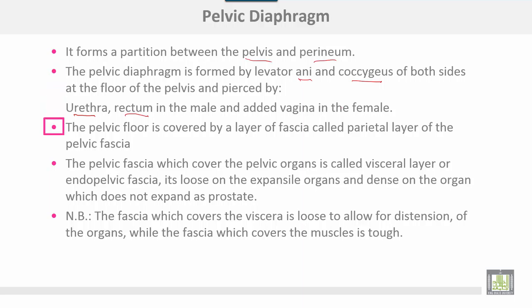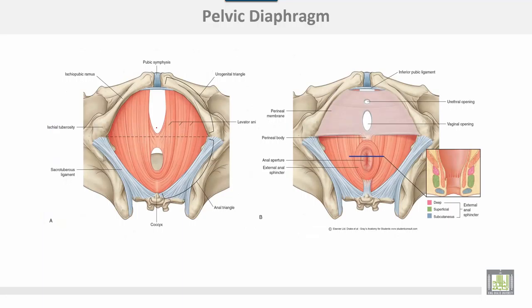The pelvic floor is covered by a layer of fascia called the parietal layer of the pelvic fascia. The pelvic fascia which covers the pelvic organs is called the visceral layer or endo-pelvic fascia. It is loose on the expansile organs and tight on organs which do not expand, such as the prostate. The fascia covering the viscera is loose to allow for distension of the organ, whereas the fascia covering muscles is tough.